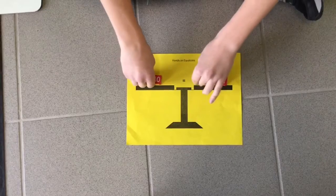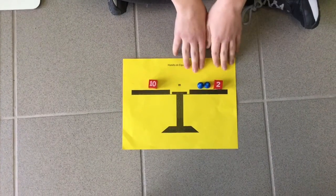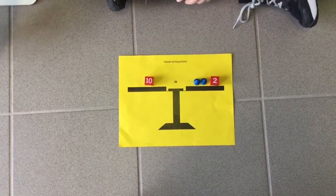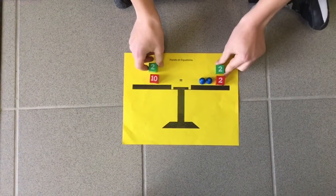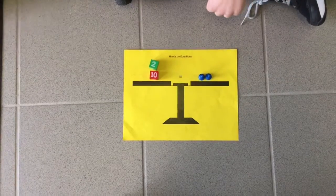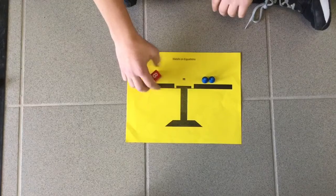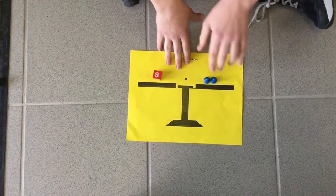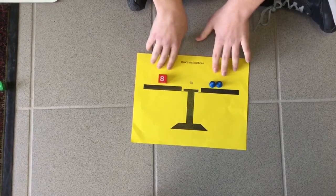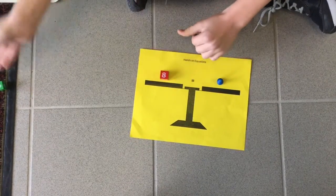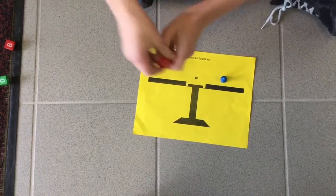You want to start by taking away the same thing from each side. To get rid of this positive 2, you have to add a negative 2 to both sides. This is a pair of 0, you get rid of that, and then this is 8, so 2x equals 8. Now divide that by 2, each thing by 2, so x equals 4.